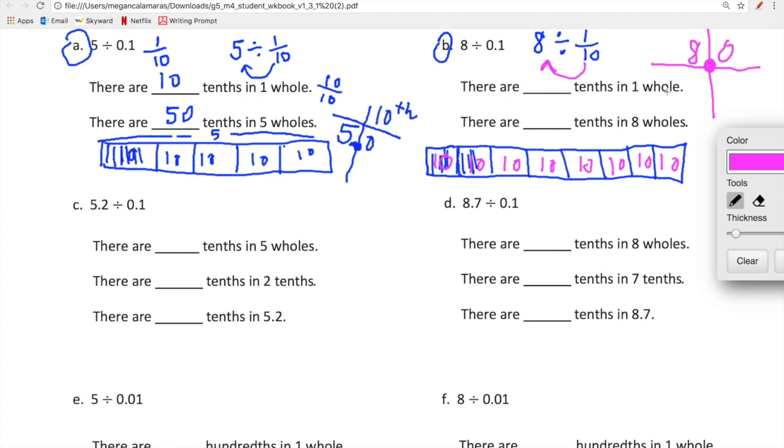There are blank tenths in one whole. I know this one. There are ten tenths in one whole. Feeling good. There are blank tenths in eight wholes. Let's just think about eight on the place value chart. I can rename this eight as 80 tenths.